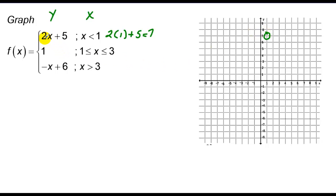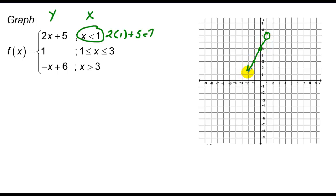Since this is a line with a slope of positive 2, I can't go right because x must be less than 1. So I use the equivalent: go down 2, back 1, which lands me at the y-intercept of 5. I continue down 2, back 1, connect the dots, and draw the graph going forever to the left.